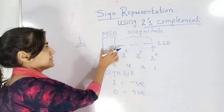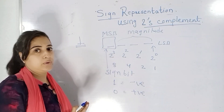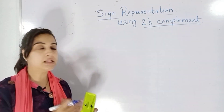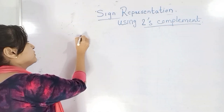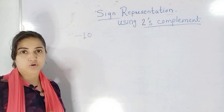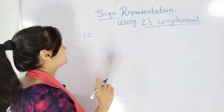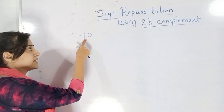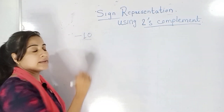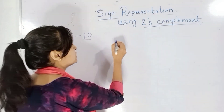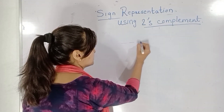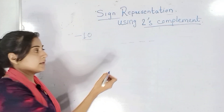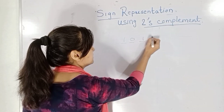Now in signed representation using 2's complement method, we will take one example. If I want to represent minus 10 using 2's complement method, I will represent it in 5 bits. Because the magnitude of 10 requires at least 4 bits. If I convert 10 to binary, I get 1, 0, 1, 0.